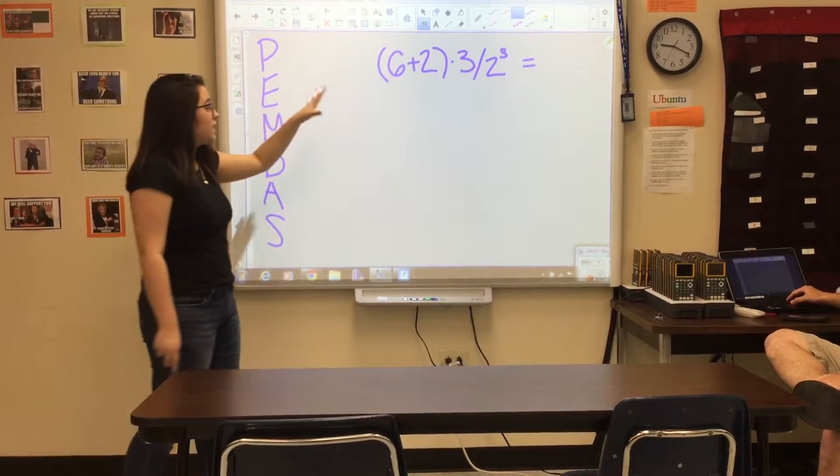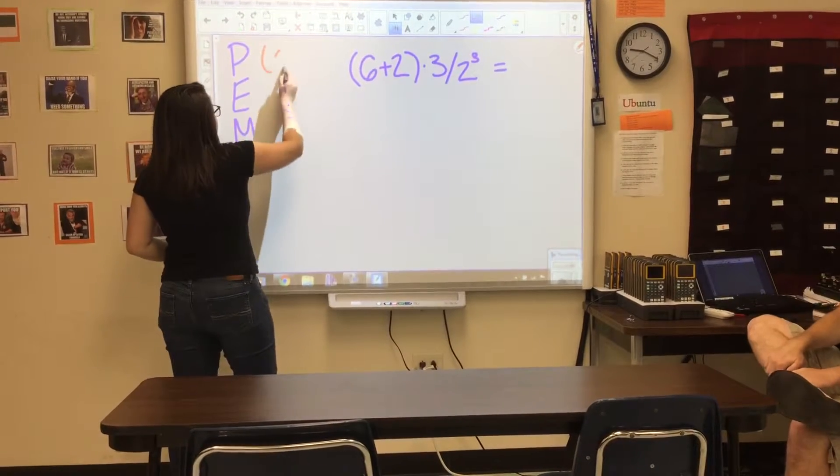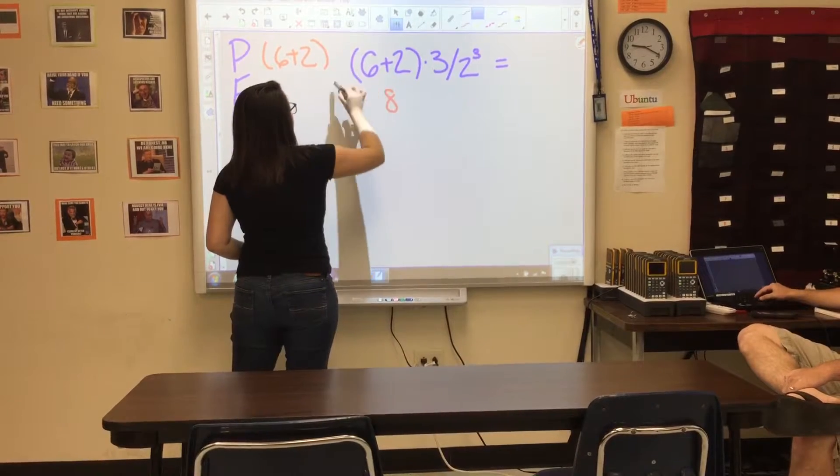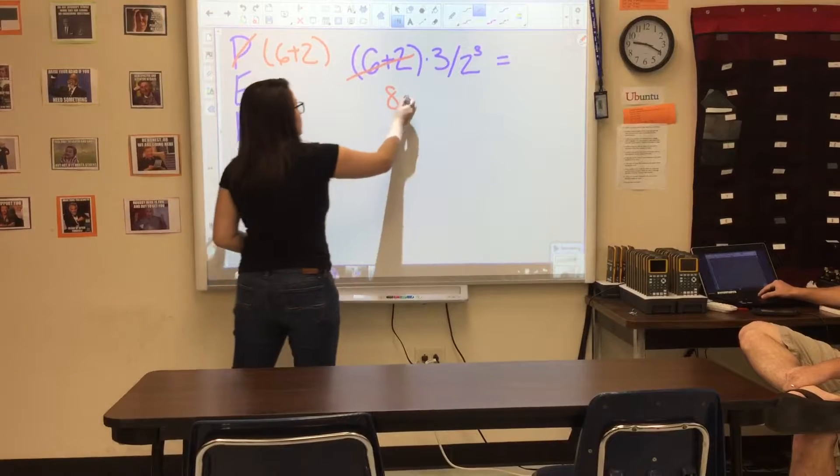And so right here we have an equation where we have parentheses, so what you're going to do is approach that first. So you're going to write the 6 plus 2 right next to the P. And 6 plus 2 is 8, so you're going to write that there, and we did the parentheses. We're going to bring down the rest of the equation.